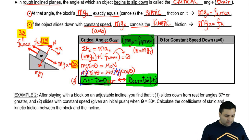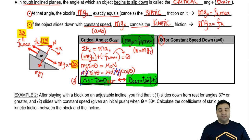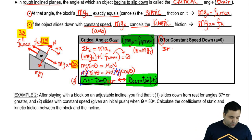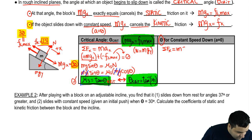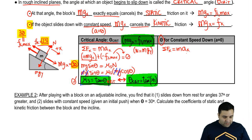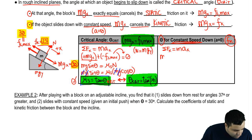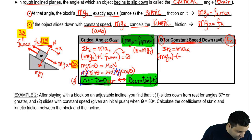The second part is very similar — finding which angle gives constant speed down the plane. Writing F equals MA: sum of all forces in the x-axis equals MAx. If you are moving at constant speed, you're going up against kinetic friction, so mgx is positive and kinetic friction is negative.